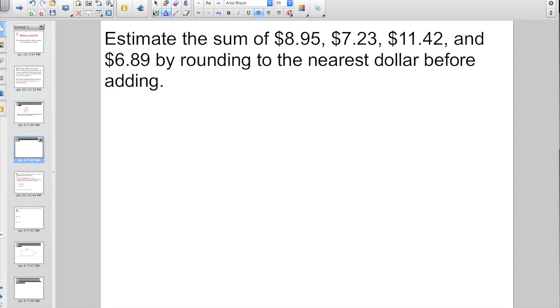Check out this one. Here they're asking us to estimate the sum. Hopefully you know that is the answer when we add the sum of $8.95, $7.23, $11.42, and $6.89 by rounding to the nearest dollar before adding.